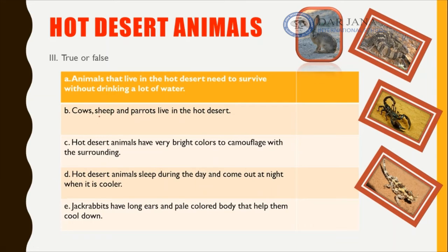Let's read each sentence and decide whether it is true or false. 'Animals that live in the hot desert need to survive without drinking a lot of water.' We know the hot desert has very little rain, so animals must survive without drinking a lot of water — this sentence is correct.